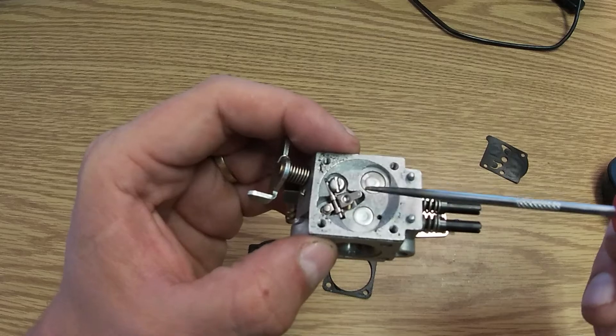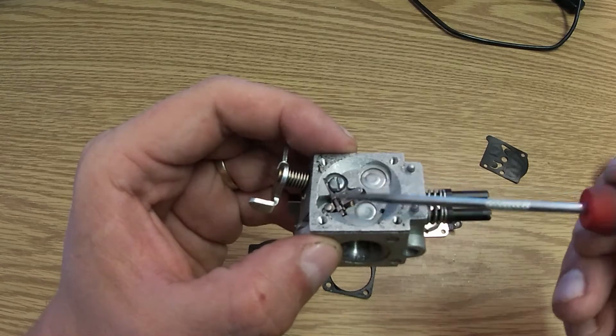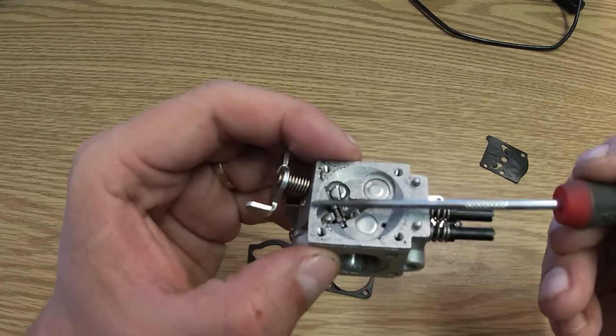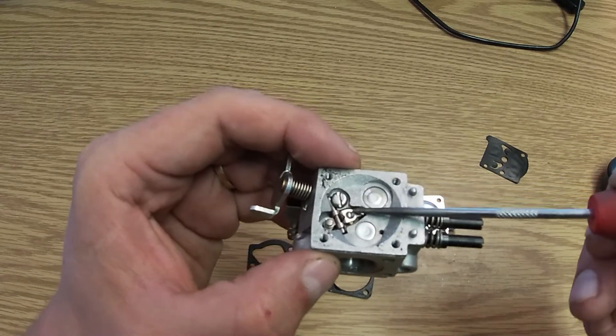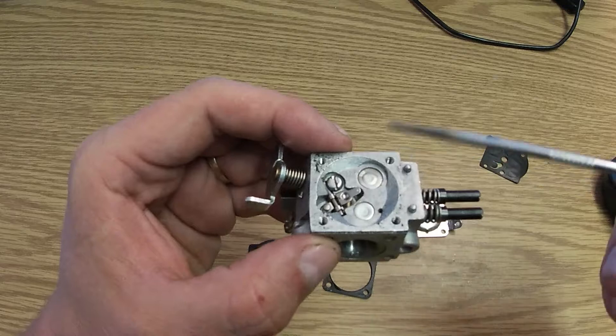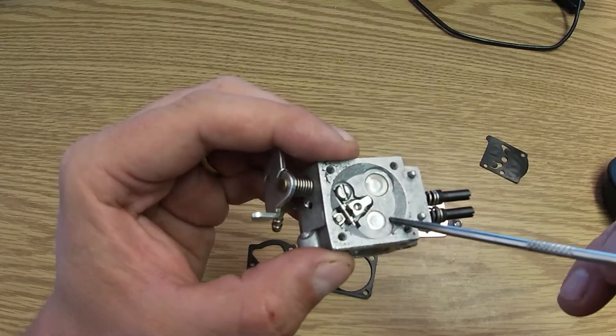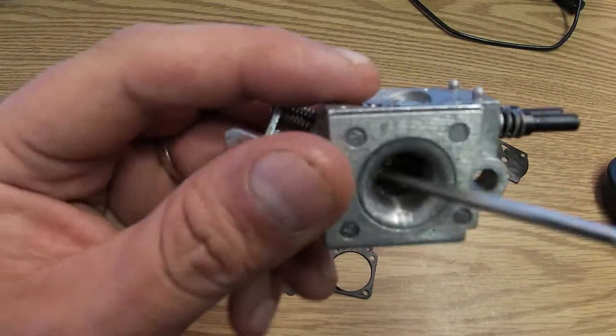Now when that piston goes down, it's going to flatten out again, and then as the piston goes back up, it's going to push it down, allowing more gas to come in, and then also pushing gas through this hole, causing it to go into the fuel body here.